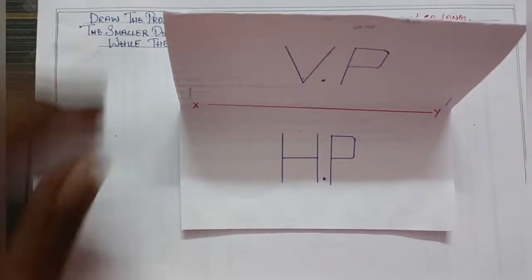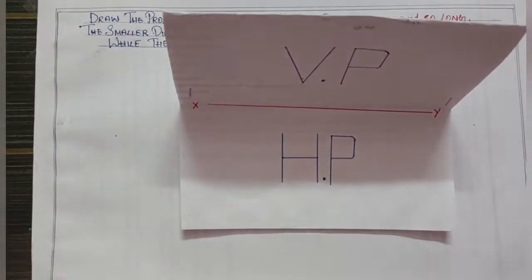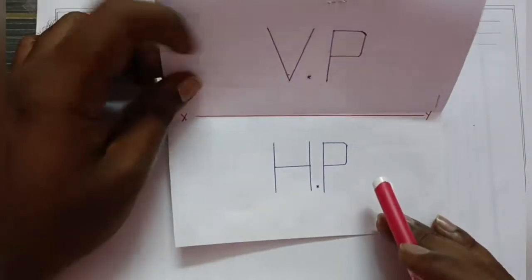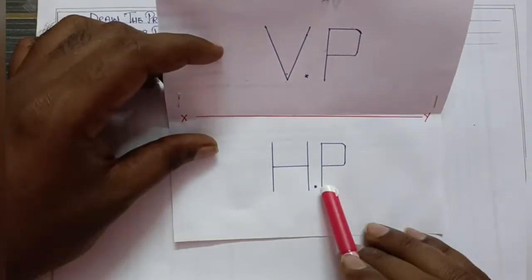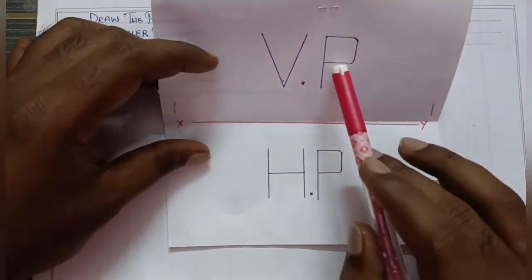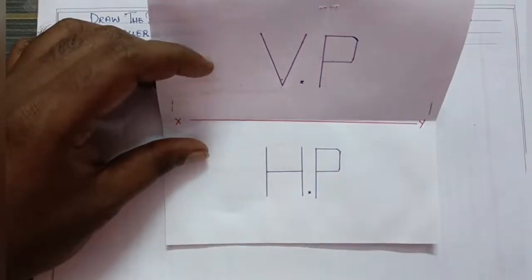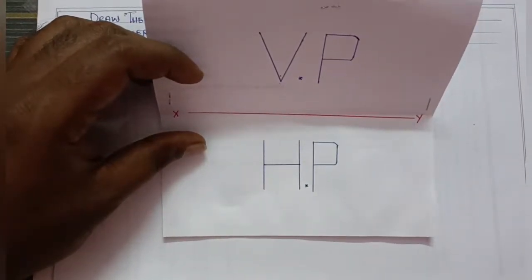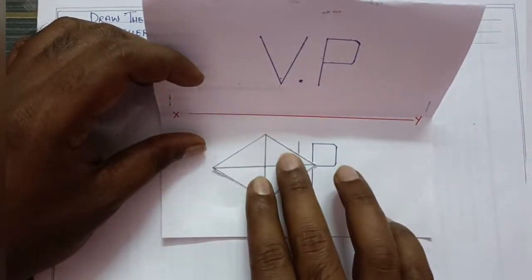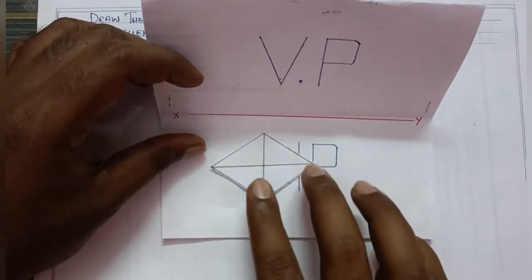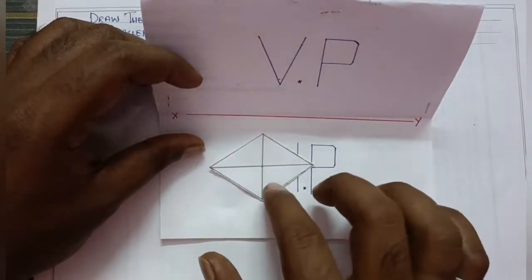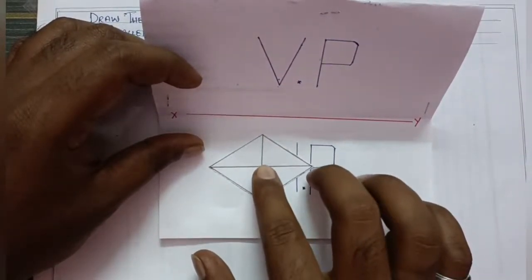So we choose the principal planes — this HP and this VP. As the dimensions are 120 and 60, we place them accordingly. We accept the distance and set up the drawing with these conditions.